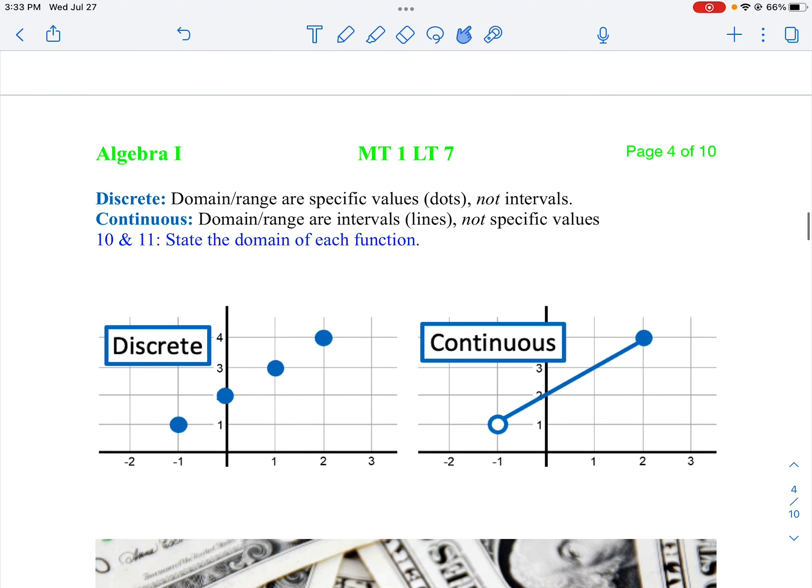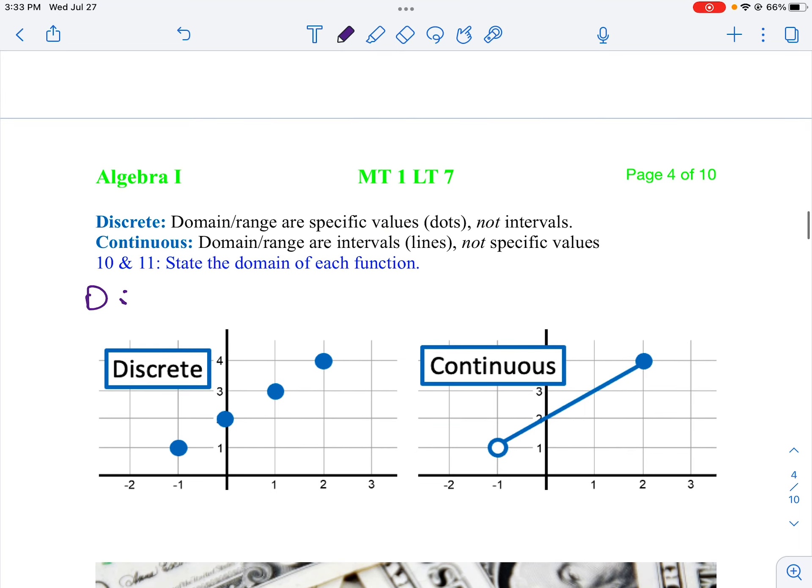Now when we look at discrete, discrete are just points. They're not a continuation like they are. So when we have a discrete domain, we don't have to use our variable even. We're just going to list the numbers. So my domain starts at negative 1 and it goes all the way up to 2, but I'm not including the values in between. So negative 1, 0, 1, and 2. See that? Because that's all we're doing.